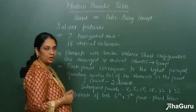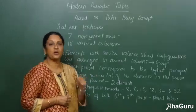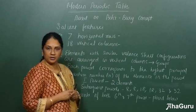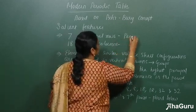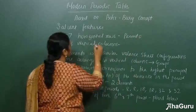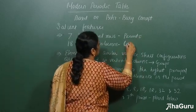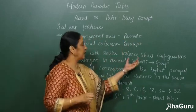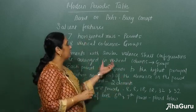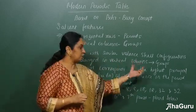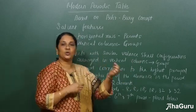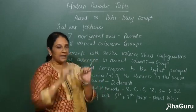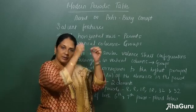The modern periodic table is based on the Bohr concept of electronic configuration. There are seven horizontal rows known as periods and eighteen vertical columns called groups. Elements with similar valence electron configuration are arranged in vertical columns, that is groups. For example, sodium and potassium will have the same valence electron, that is S1 — they both end with S1 — so they are placed in the same group.